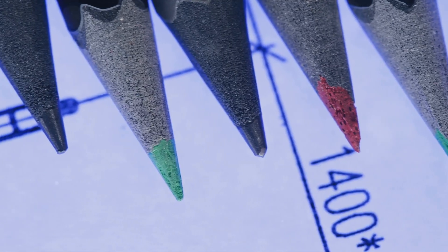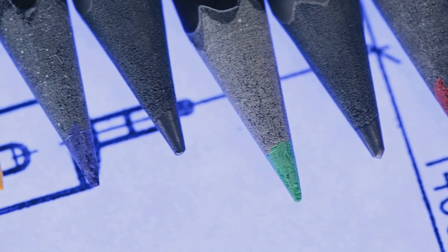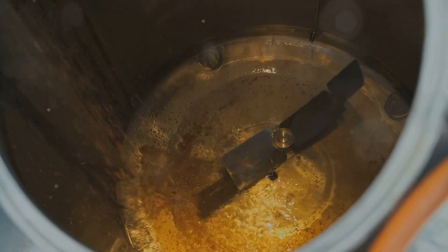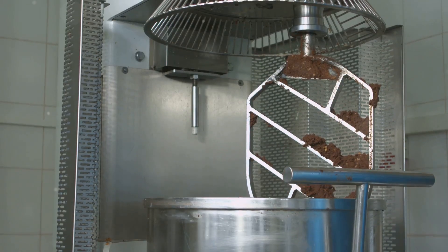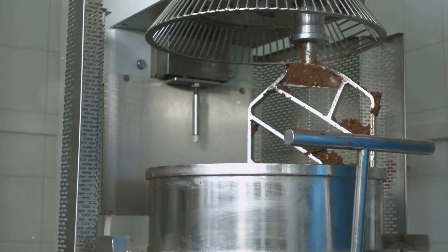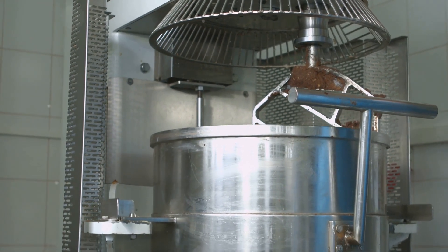Blending for perfection. The heart of pencil lead production lies in the art of blending. Graphite and clay, carefully measured and weighed, are combined in giant mixers. These mixers, resembling oversized bread dough kneaders, ensure a homogeneous mixture.